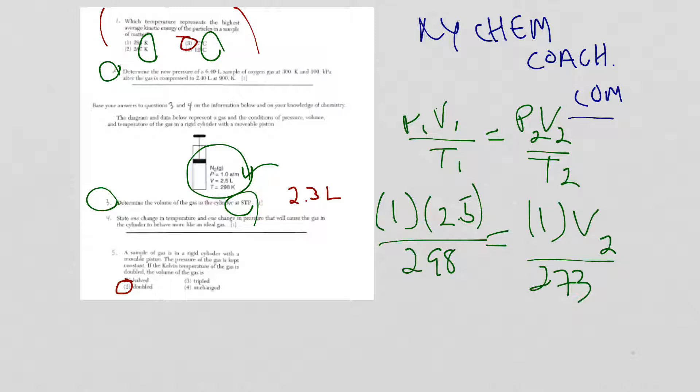For question 4, it says state one change in temperature and one change in pressure that will cause the gas in the cylinder to behave more like an ideal gas. Any real gas is going to behave more like an ideal gas at a higher temperature and lower pressure. That's in general. You could be specific, but I don't think you need to. Higher temperature, lower pressure.